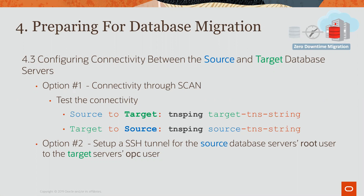We will now review the proper database connectivity required between the source and target database servers. Your first option is to test your connectivity through the scan. Set up a TNS alias and test if you can TNS ping from your source database server to your target database server, and then attempt the opposite direction. If you're able to TNS ping and connect, then this is a good option for you.